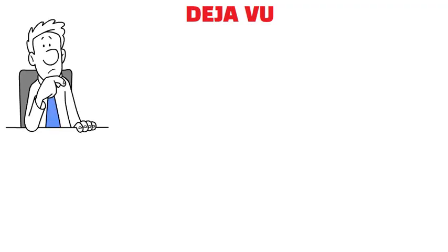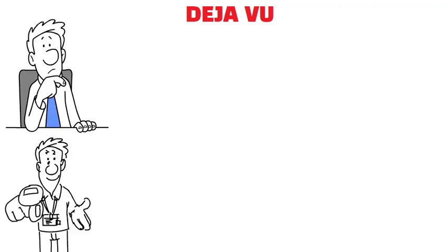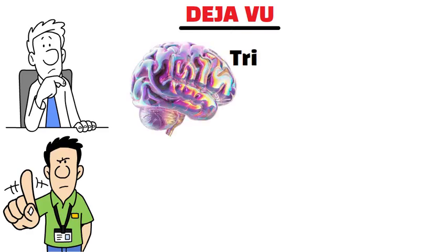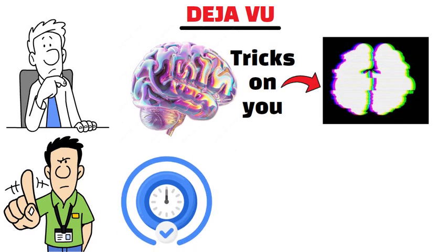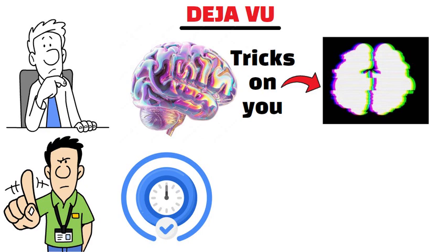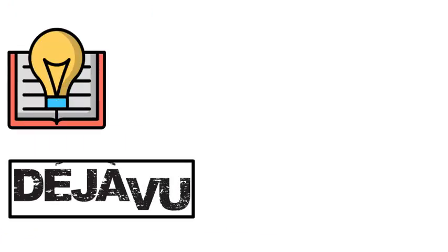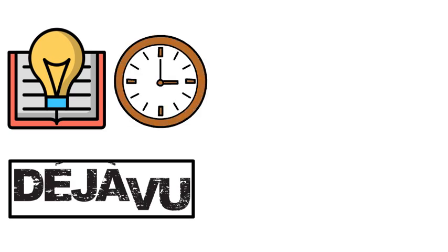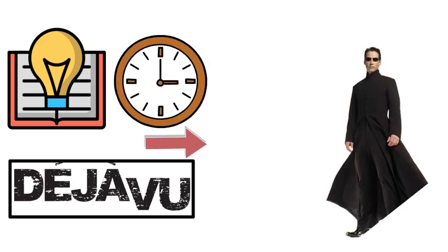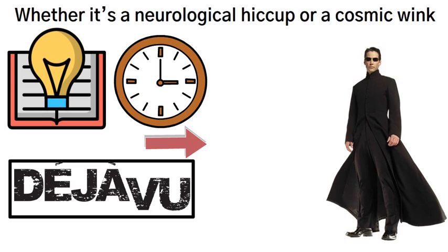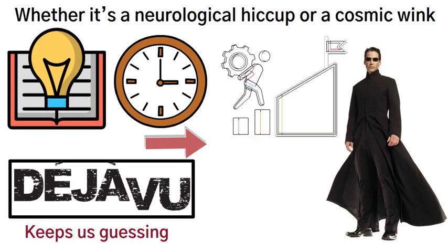Deja vu. Ever had that eerie feeling where you know you've been here before, even though you swear you haven't? Welcome to the bizarre world of deja vu, where your brain decides to play tricks on you. Science says it's a brain glitch, a moment where the present is mistakenly flagged as a past memory, like your neurons are playing a twisted game of twice in a lifetime. But hold on, it gets weirder. Some fringe theories propose deja vu is a glimpse into non-linear time or alternate timelines. Yeah, like you're suddenly Neo in the Matrix peeking into the multiverse. Whether it's a neurological hiccup or a cosmic wink, deja vu keeps us guessing, challenging our perception of reality itself.